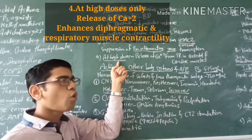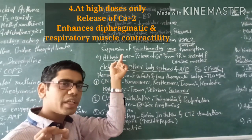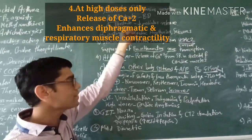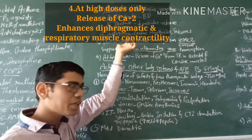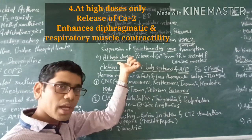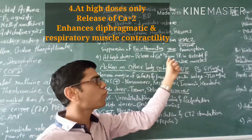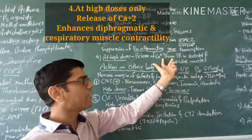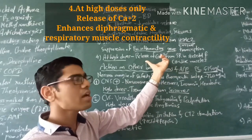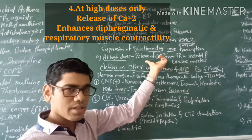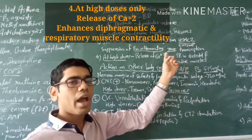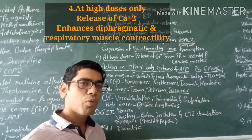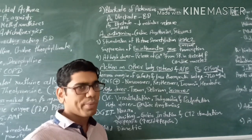The fourth mechanism of theophylline is seen characteristically at high doses only — unlike mechanisms one and two which are seen at therapeutic doses, and mechanism three which can occur at sub-therapeutic doses. This fourth mechanism involves release of calcium from the sarcoplasmic reticulum in skeletal and cardiac muscles. Calcium release increases muscle contractility, especially enhancing diaphragmatic contractility, which can provide relief from dyspnea or breathlessness.